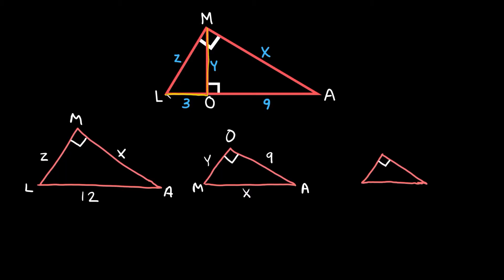Now we're looking at the small triangle. The vertices are M, O, and L, and since we have a right angle at O, we label that vertex O here as well. The short leg goes from O to L, and the long leg goes from O to M. From O to L is labeled 3, from O to M is labeled Y, and from L to M is labeled Z.